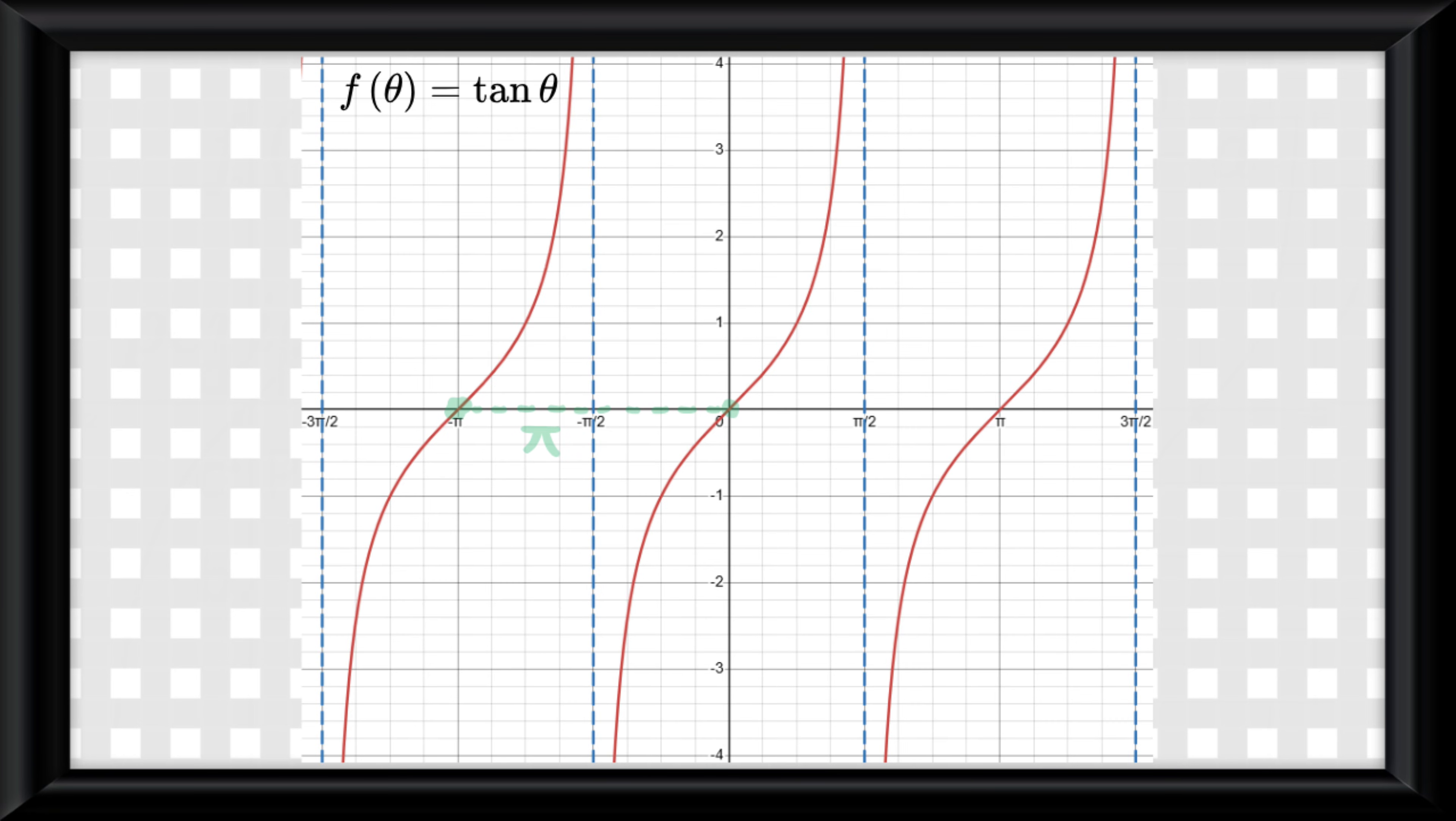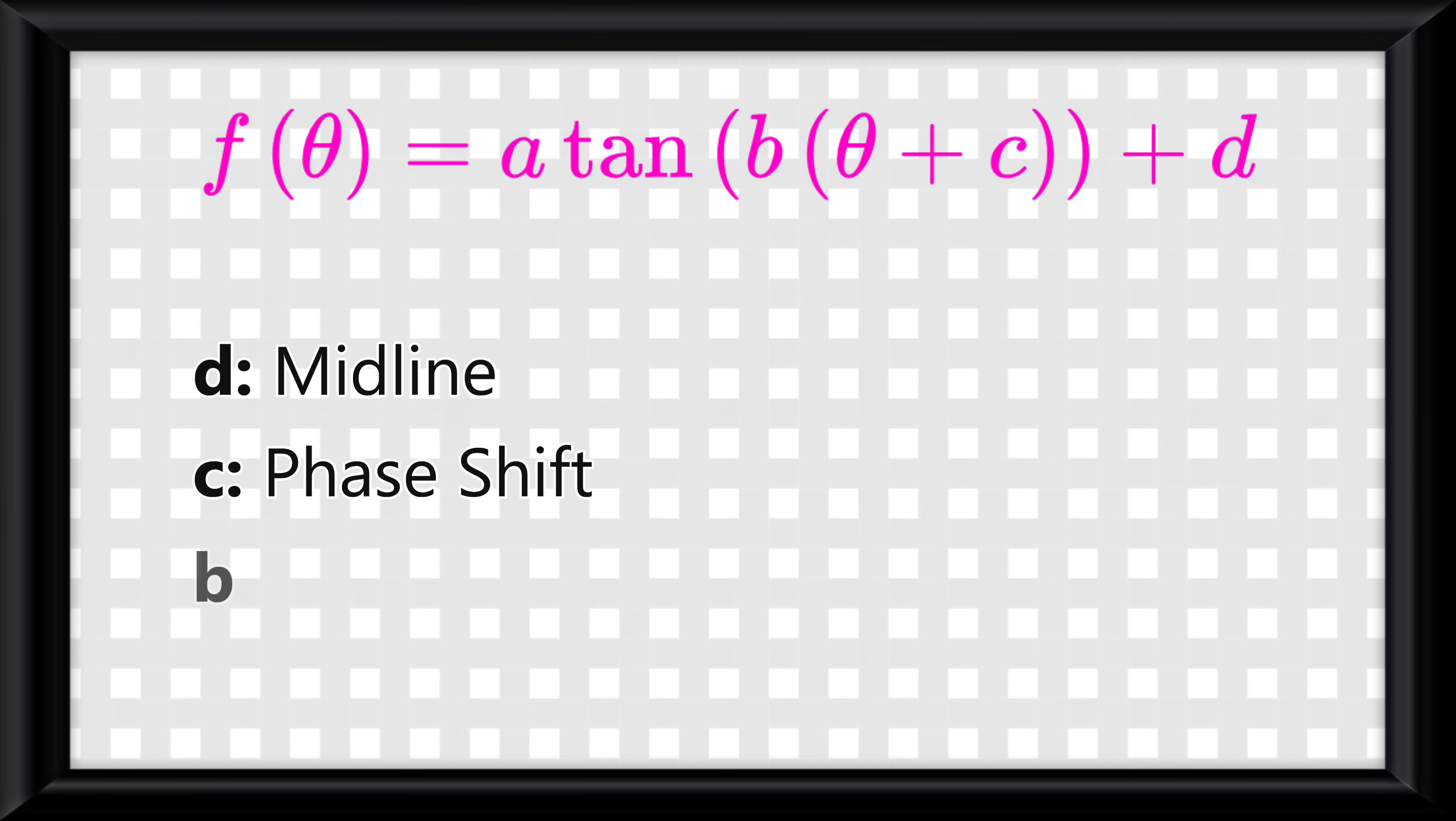As for b, since the parent function has a period now that is pi, b is now equal to pi over the period, for only tangent functions.